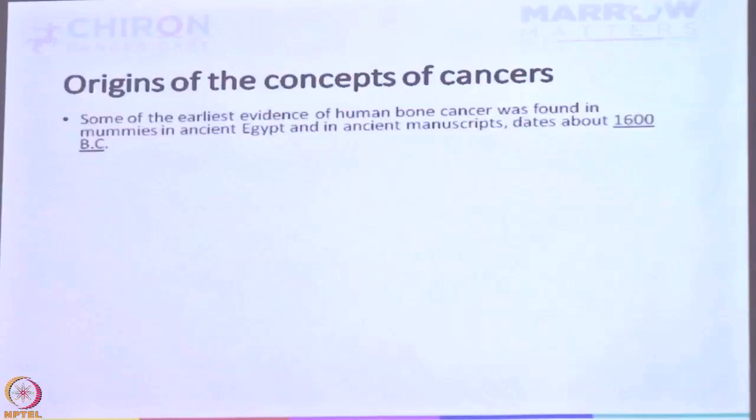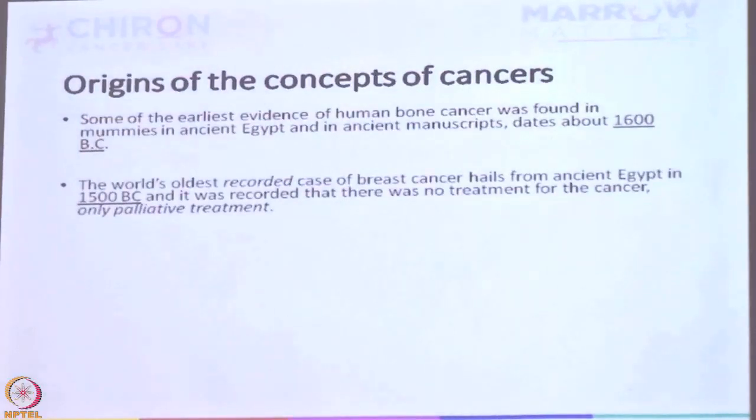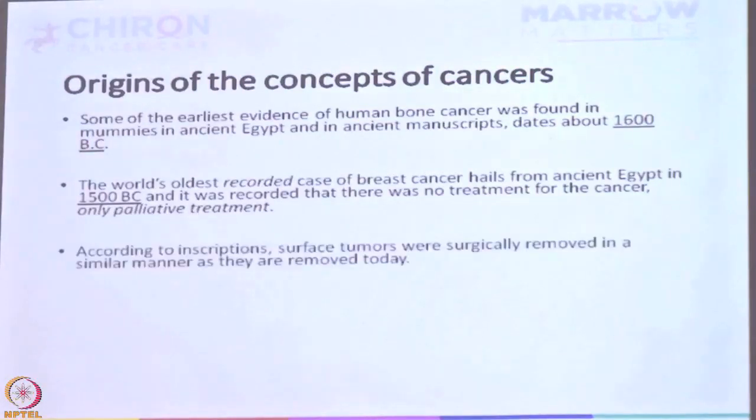How did this whole concept of cancer originate? How did doctors in the past think: I have five kinds of patients and this person has something else — this person has a fever with lymph nodes, this person has lymph nodes with no fever, maybe this is not an infection. We can only go back to Egyptian mummies; tuberculosis and tumors have been discovered in them. The oldest recorded case is about 1500 BC, and at that time nobody knew it was cancer — no concept of treatment, patients just got comfort care and died.